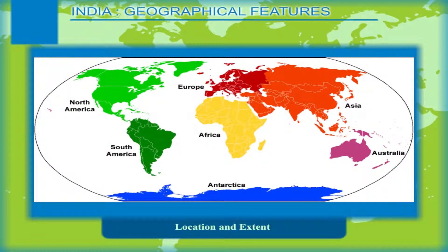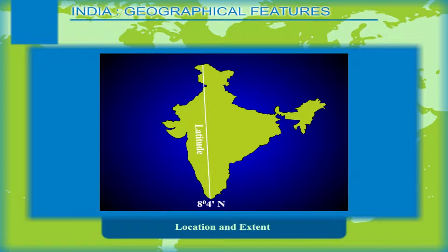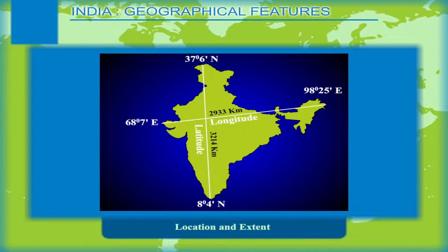The 7th largest country in terms of its area, India stretches from 8 degrees 4 minutes north to 37 degrees 6 minutes north latitude in the northern hemisphere. Longitudinally, India stretches for over 30 degrees, from 68 degrees 7 minutes east to 98 degrees 25 minutes east. Its north-south extent is 3,214 kilometers and it stretches for 2,933 kilometers east to west.